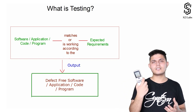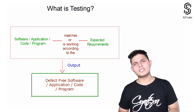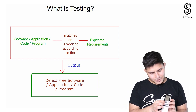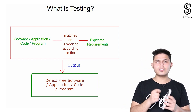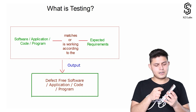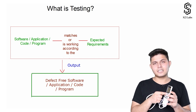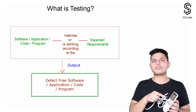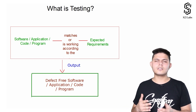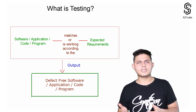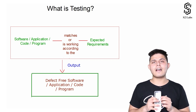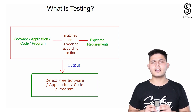Let me take an example of this remote — it's a remote for the AC. When I press this particular button, it should turn the AC on if it is already off, and if I press it again when the AC is already on, it should turn the AC off. That is the basic requirement for this button on this remote.